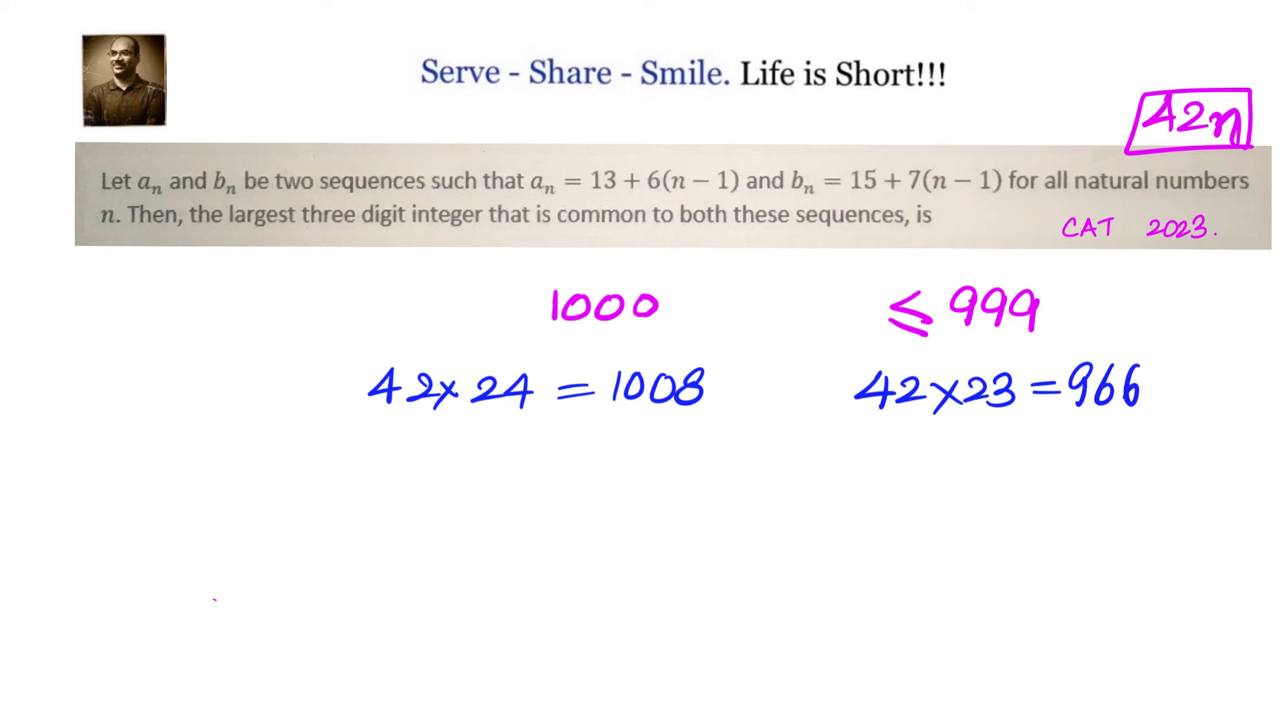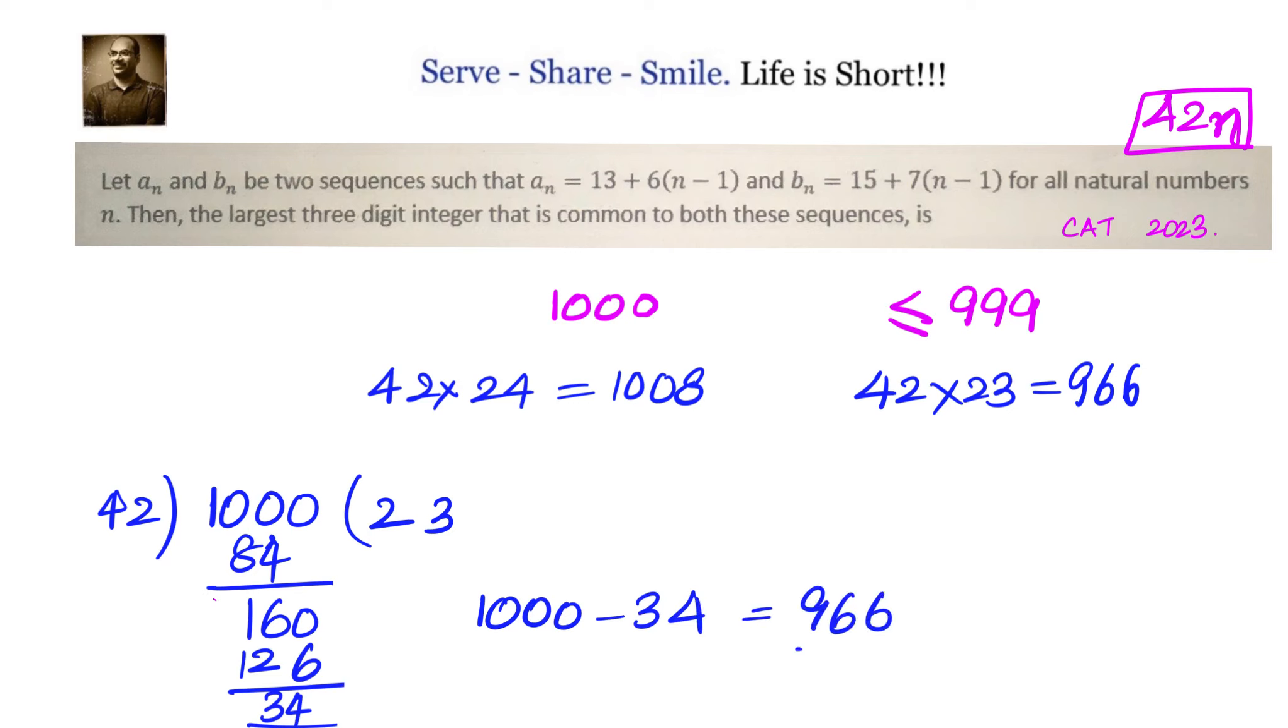If you are not comfortable with this, just take 1000 and divide by 42. 42 twos are 84, we get 160, 42 threes are 126, we get 34 as the remainder. That means 1000 minus 34, which is 966, is the greatest or largest 3-digit integer that is a multiple of 42.